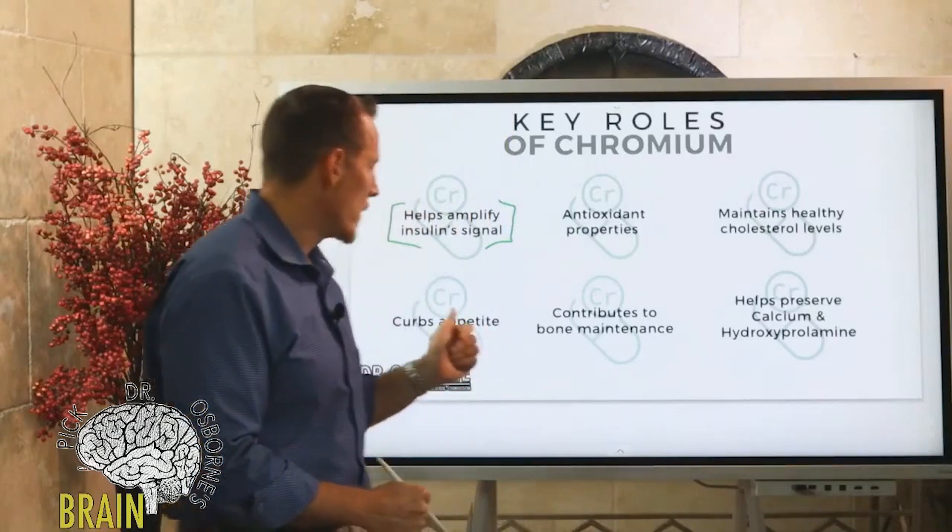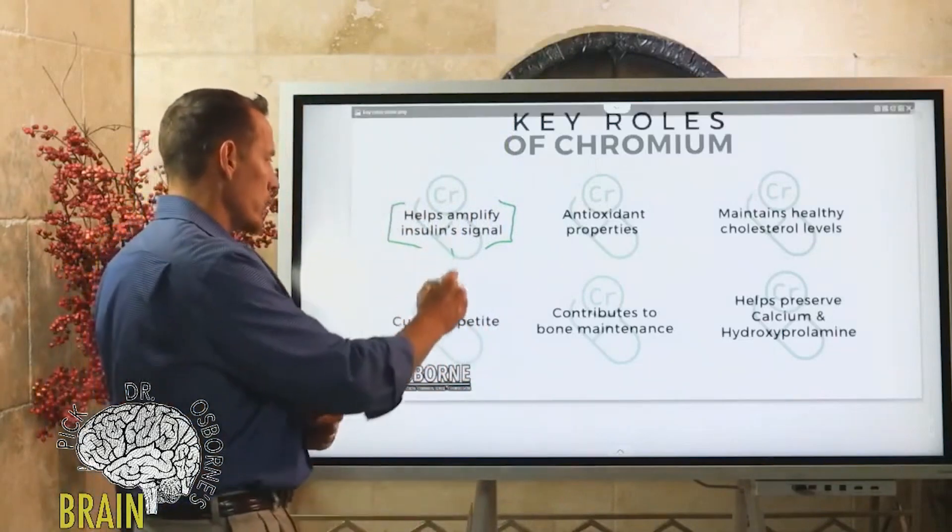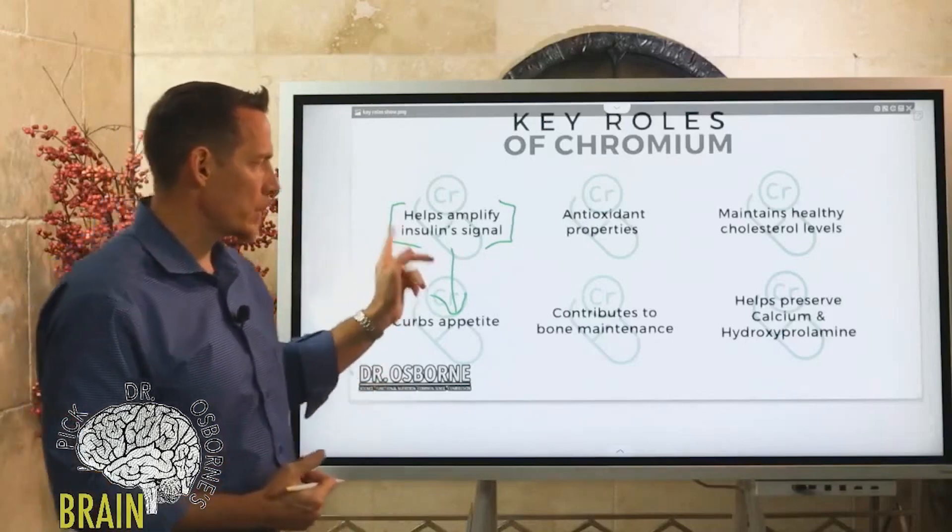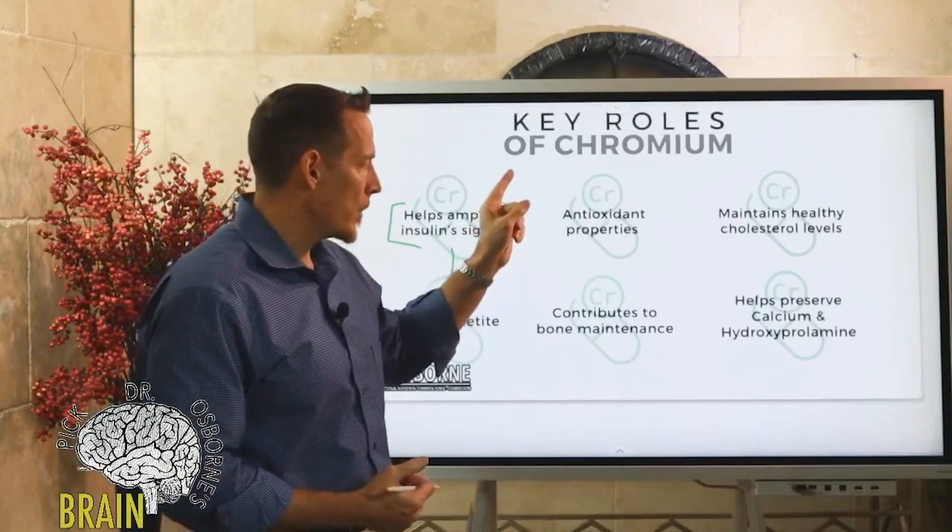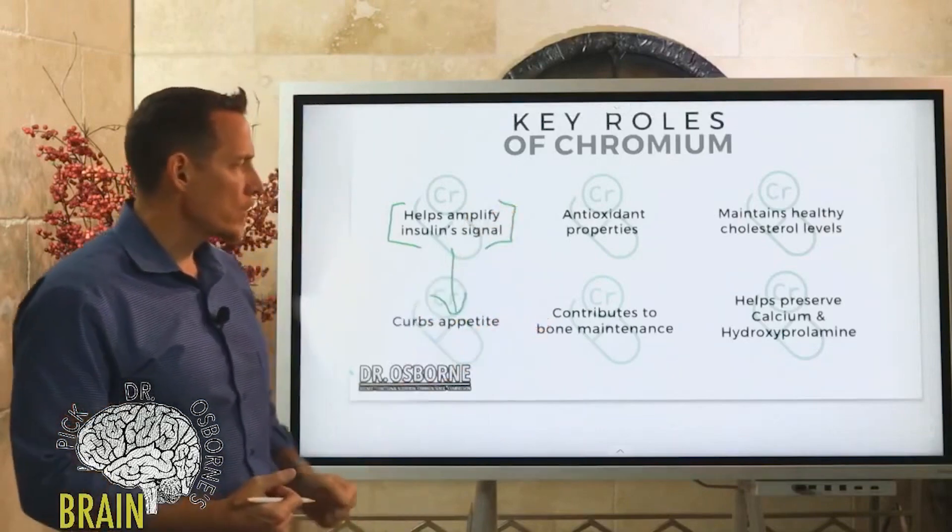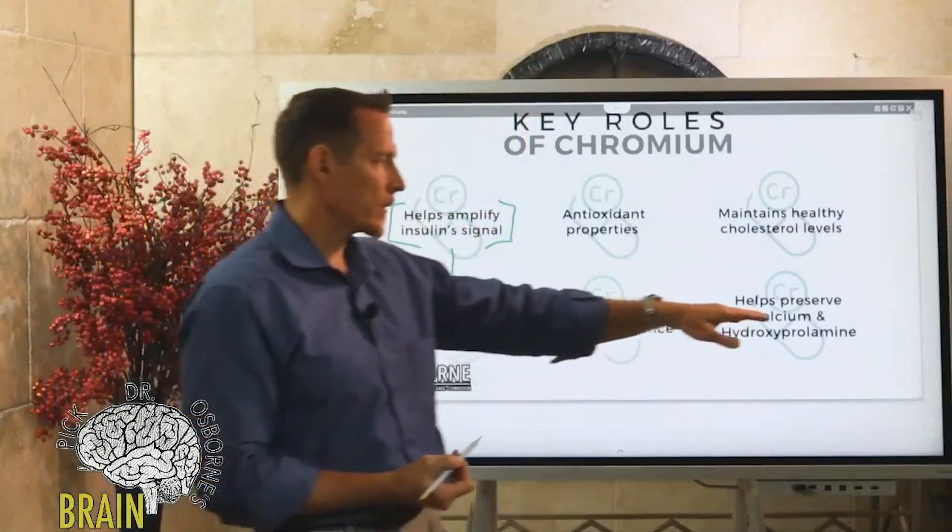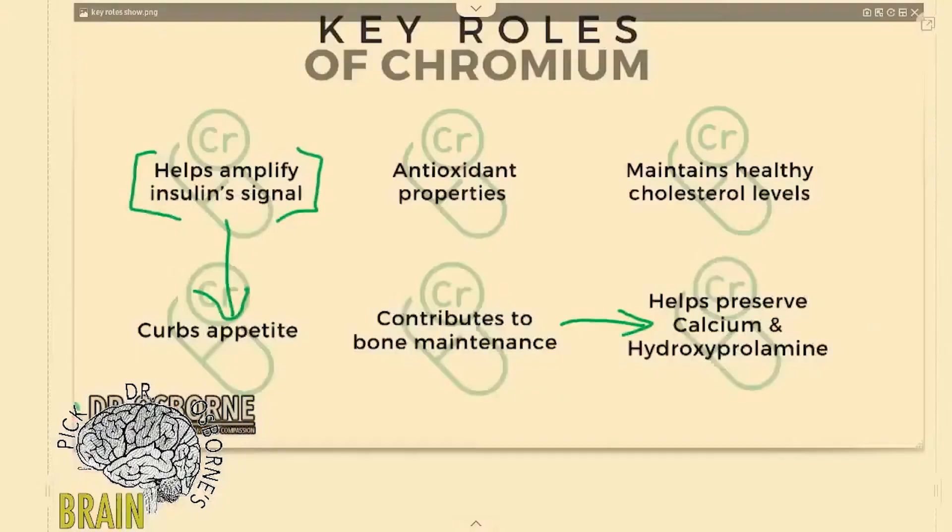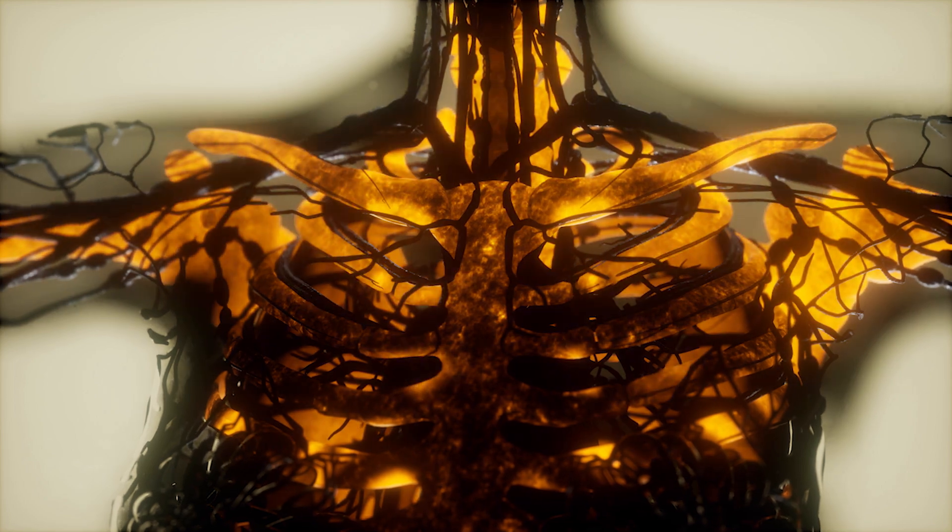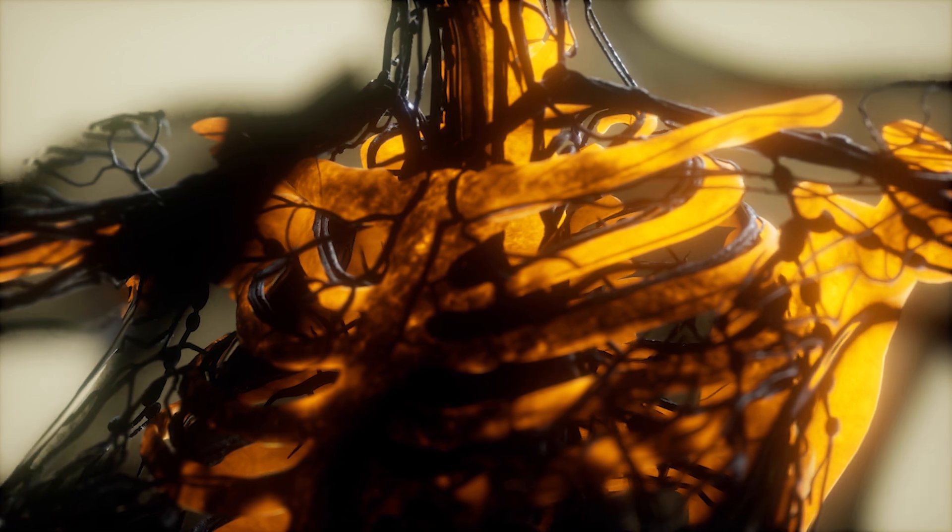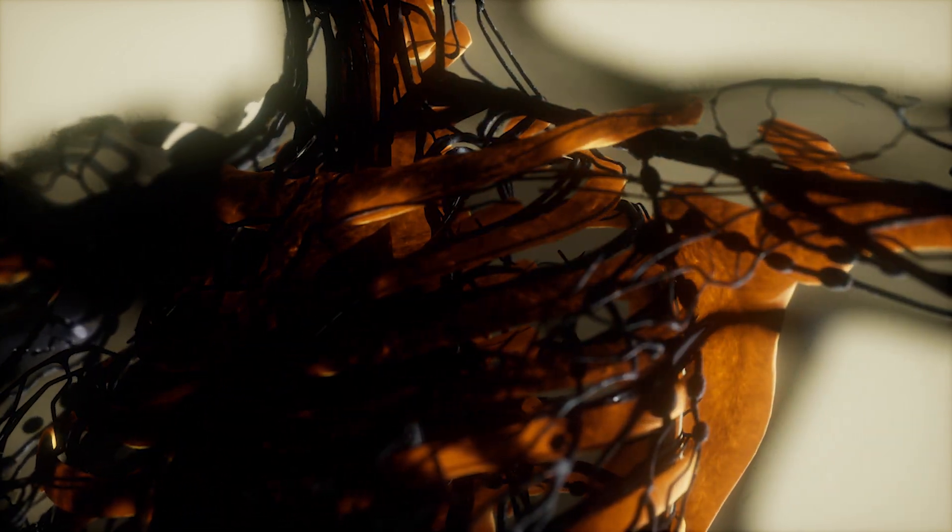It also helps to curb the appetite, and one of the reasons it helps to do that is because of its role with insulin. In addition, it contributes to bone maintenance in part because it helps preserve calcium and hydroxyproline, which play a role in bone health. Chromium is very important as an element to blood sugar, very important as an antioxidant, and very important in bone regulation, bone turnover, and bone health. Those are really predominantly the major functions of chromium.